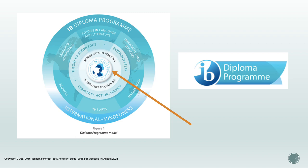The program is modeled in the following image. The first section of the model shows the subjects that students can take in the IB program. Chemistry, being a group 4 subject, is found at the bottom left corner of the model. It's often called the central science as chemical principles underpin both the physical environment in which we live and the biological systems. Apart from being a subject worthy of study in its own right, chemistry is often a prerequisite for many other courses in higher education, such as medicine, biological science, environmental science, and so on.